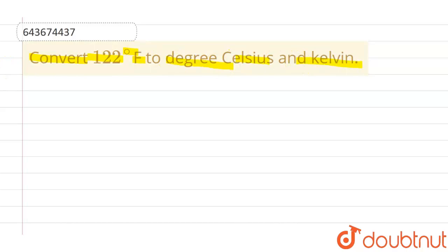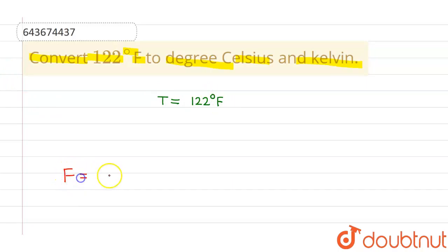So the given temperature in Fahrenheit is T equals 122 degrees Fahrenheit. Now, in order to change this Fahrenheit into Celsius, we have the formula: F equals 9 by 5 times C plus 32. This is the formula to convert Fahrenheit into Celsius or Celsius into Fahrenheit.